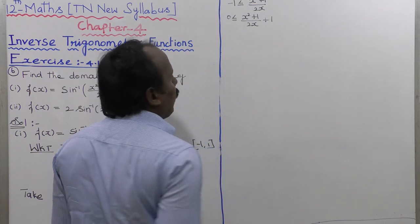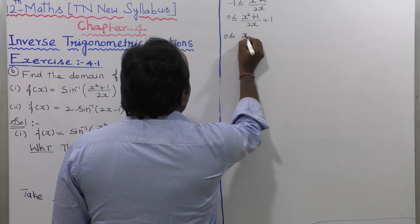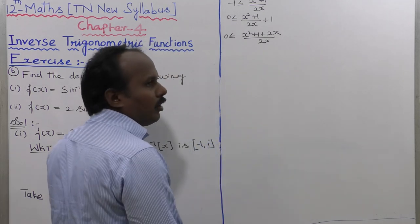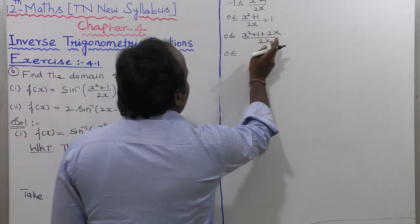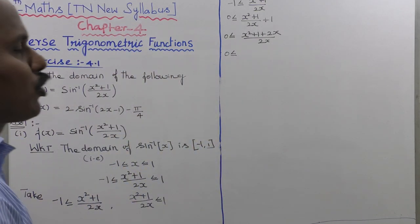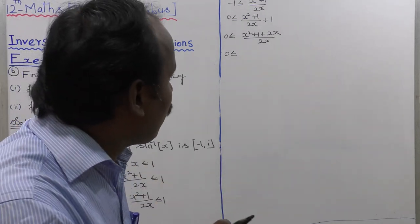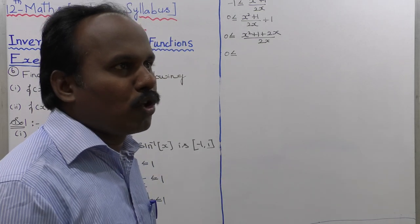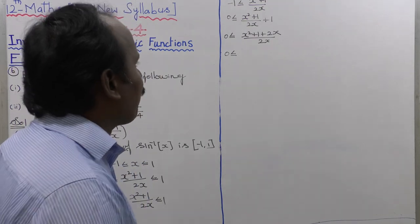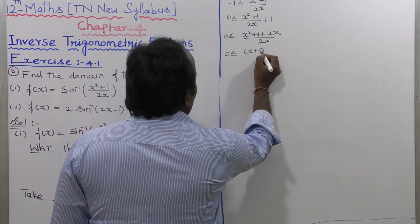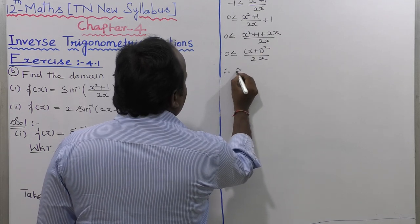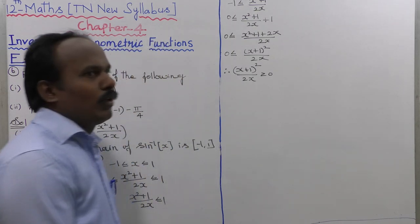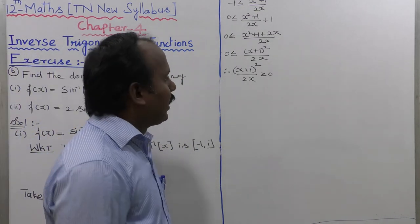Cross-multiplying the numerator, x squared plus 1 plus 2x equals (x plus 1) whole squared, using the formula (a plus b) squared equals a squared plus 2ab plus b squared. So we get (x plus 1) whole squared divided by 2x is greater than or equal to 0. This inequality is satisfied when greater than or equal to 0.